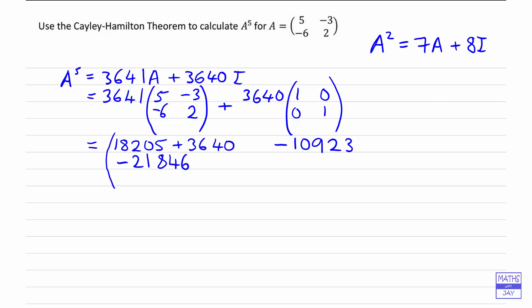And 3,640 times 0 is just 0. So that's all we've got there. And then looking at the second row, we're multiplying 3,641 by -6, so that's -21,846. And we get nothing from the second matrix. And then we have 3,641 multiplied by 2, so that's 7,282, and then we're adding on 3,640 multiplied by 1. So just a bit of addition and we're there.